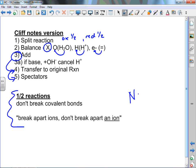When you think about those half reactions, remember we're talking about net ionic. We don't break covalent bonds. So you break apart two ions, but you don't break apart an ion.